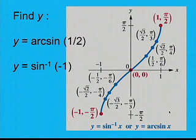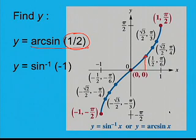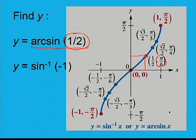Now let's look at an example using that curve. Find y if y equals arc sine of one-half, and then a second example: y equals sine inverse of negative one. Starting with arc sine of one-half, we look for the x value of one-half, look up to the graph, and read off the corresponding y value. It's given right here that the y value is pi over six. Another way of thinking of arc sine of one-half is to ask: what is the angle whose sine is one-half?